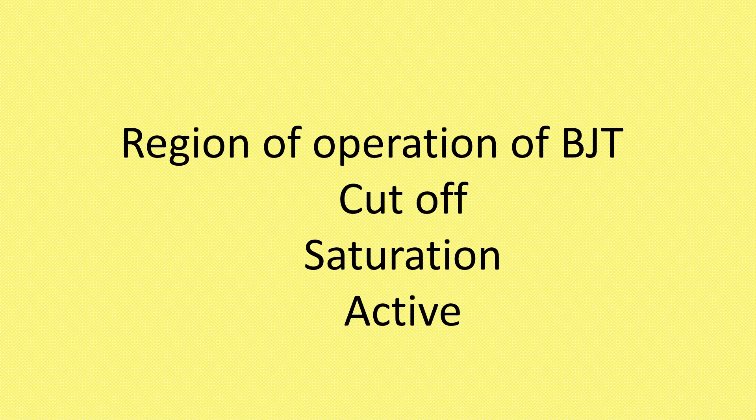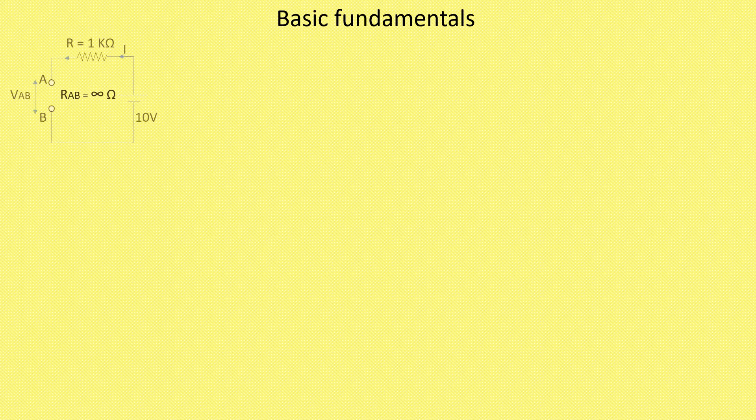The biasing methods make a transistor work in mainly three regions of operation: cutoff, saturation, and active. Let us study the regions of operation of BJT. We will first understand the meaning of the terms cutoff, saturation, and active.